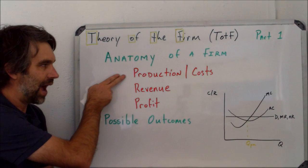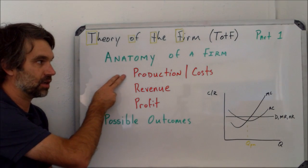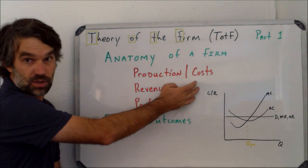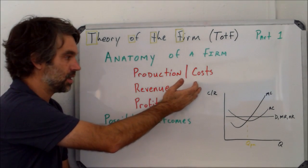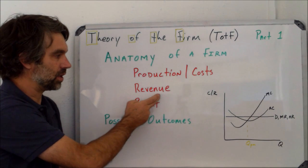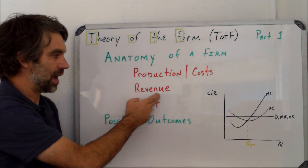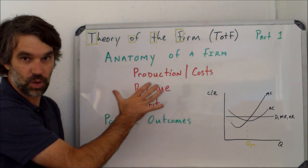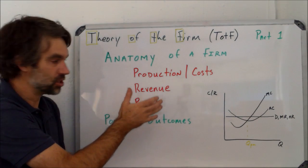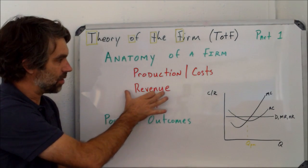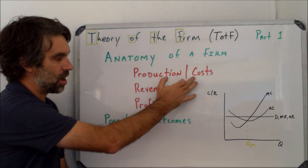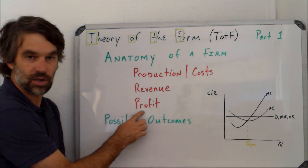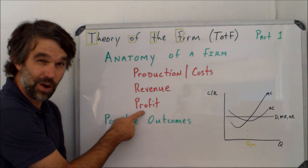We'll go through how production occurs and of course the costs that go along with production. Then we'll look at the revenue and how that situation might change. And then once you combine those two — revenue and cost — you can start to talk about profit.